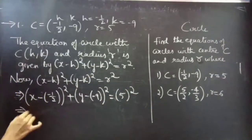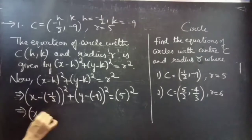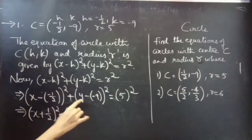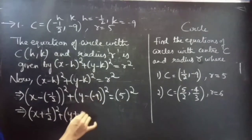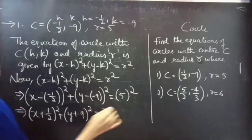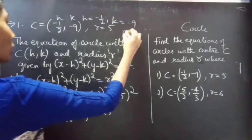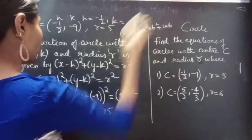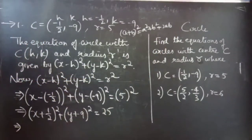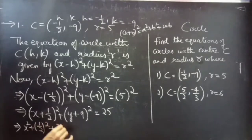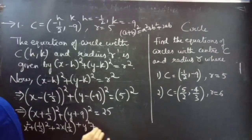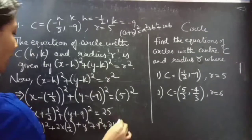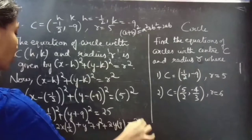So we get (x + 1/2)² + (y + 9)² = 5² = 25. These two terms are of the form (A + B)² which equals A² + B² + 2AB. So we can expand these two using that identity.